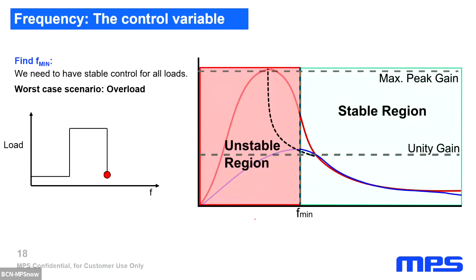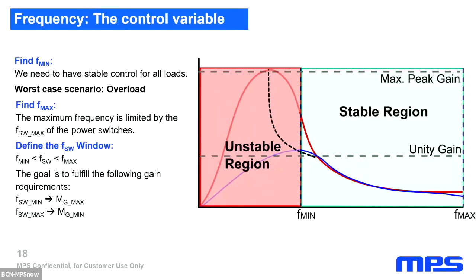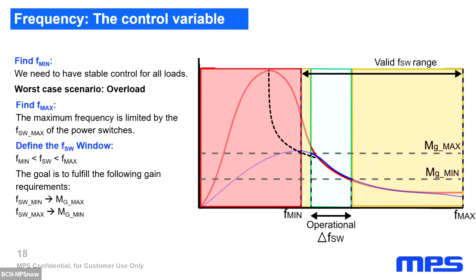Once we fix the minimum frequency, let's take a look at the frequency range that the converter can operate in. We first can establish an absolute maximum frequency, which is going to be defined by the maximum switching frequency of the MOSFETs and the controllers. But the operating frequency window needn't be this large. Instead, we can define it with our maximum and minimum gain that we established before, and therefore we can operate within this reduced switching frequency.